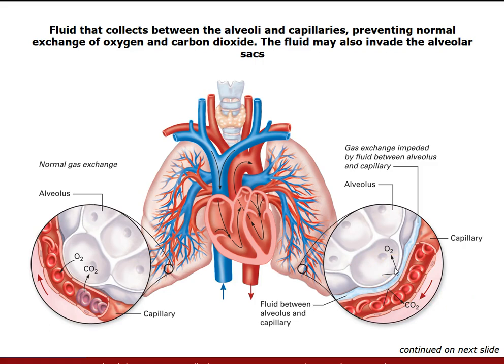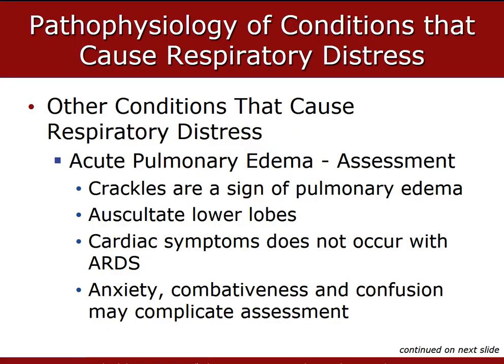Cardiogenic pulmonary edema is typically related to an inadequate pumping function of the left ventricle that drastically increases the pressure in the pulmonary capillaries, which forces fluid to leak into the space between the alveoli and capillary bed and eventually into the alveoli themselves.